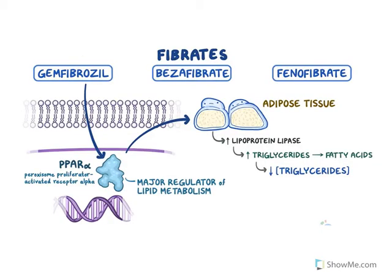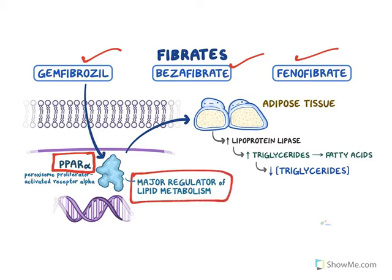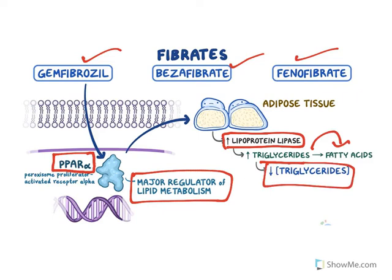The next class is fibrates. The major drugs are gemfibrozil, bezafibrate, and fenofibrate. Their target is a particular receptor known as peroxisome proliferator-activated receptor alpha (PPAR-alpha). This particular protein is a major regulator of lipid metabolism. It regulates lipid metabolism by activating an enzyme called lipoprotein lipase, which converts triglycerides to fatty acids, so the levels of triglycerides go down.